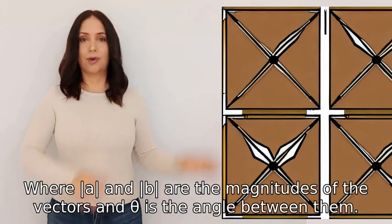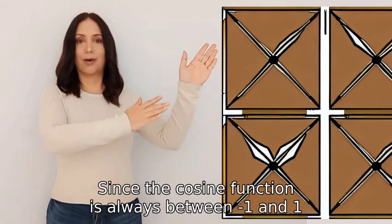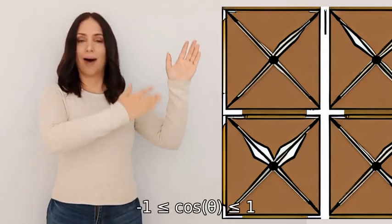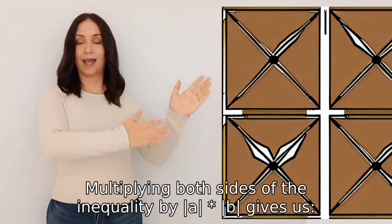|a| and |b| are the magnitudes of the vectors and θ is the angle between them. Since the cosine function is always between -1 and 1, we have -1 ≤ cos(θ) ≤ 1. Multiplying both sides of the inequality by